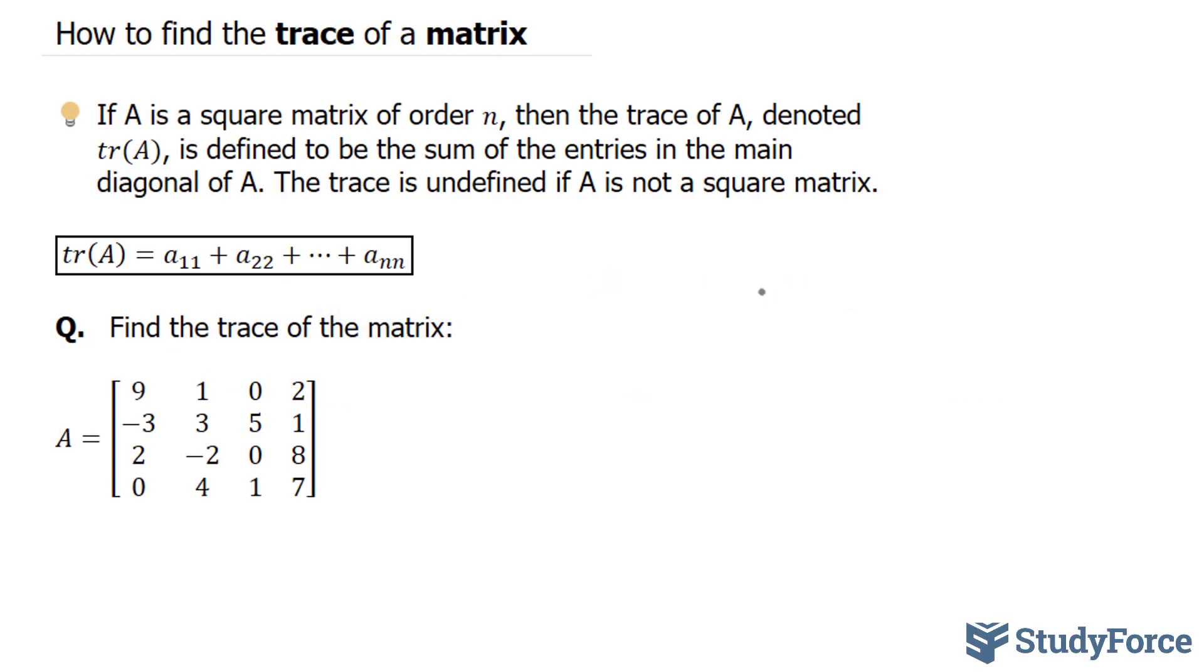In this lesson, I'll show you how to find the trace of a matrix. If a matrix A is a square matrix of order n, then the trace of A, denoted as TR(A), is defined to be the sum of the entries in the main diagonal of the matrix. The trace is undefined if A is not a square matrix.